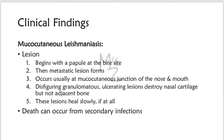In mucocutaneous leishmaniasis, the lesion begins with a papule at the bite site, followed by metastatic lesion formation, usually at the mucocutaneous junction of the nose and mouth — the region where mucosa transitions to skin. Disfiguring metastatic ulcerating lesions destroy nasal cartilage but not adjacent bone. These lesions heal slowly, if at all, and death can occur from secondary infections.